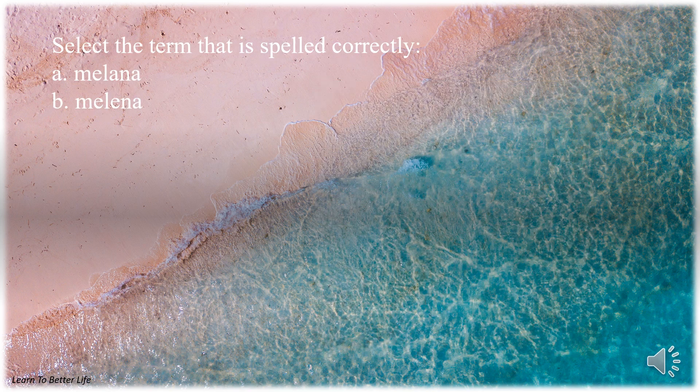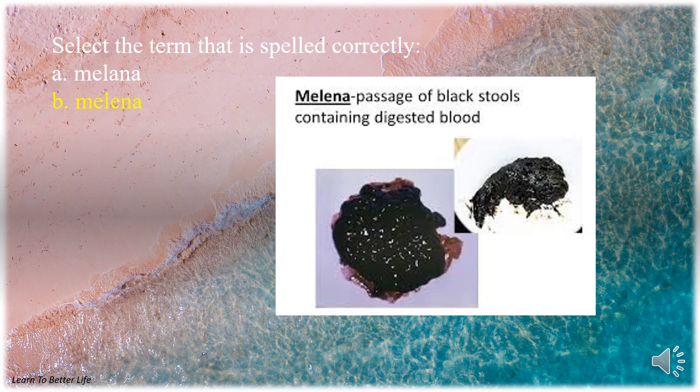Select the term that is spelled correctly. A. Melanobi. B. Melena. The answer is B. Melena.